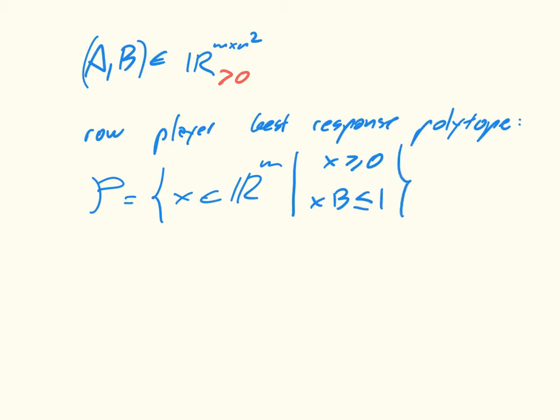So this is for the row player. We're saying that our elements are the size of the rows. These are eventually going to correspond to strategies. But then we're saying they're all the elements that are positive and that give some upper bound to the utility of the column player. This is the utility of column player. That's nothing new, that's just what we've seen. So the row player polytope has got this upper bound defined by the utility of the column player.